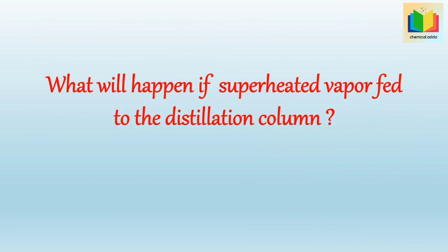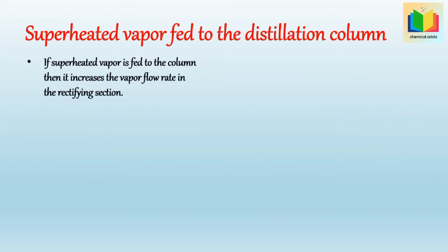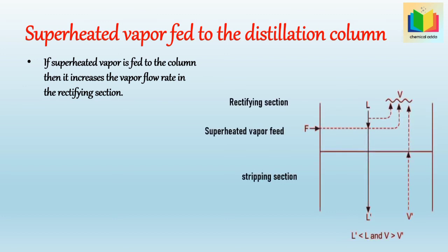Next question: what will happen if superheated vapor is fed to the distillation column? If superheated vapor is introduced as feed, then the vapor flow rate in the rectifying section increases, and the liquid flow rate in the stripping section is less than the liquid flow rate in the rectifying section. Because superheated vapor feed, while going into vapor, converts some liquid to vapor, hence the vapor flow rate in the rectifying section increases and the liquid flow rate in the stripping section is less than in the rectifying section. Hence we get L' < L and V > V'.